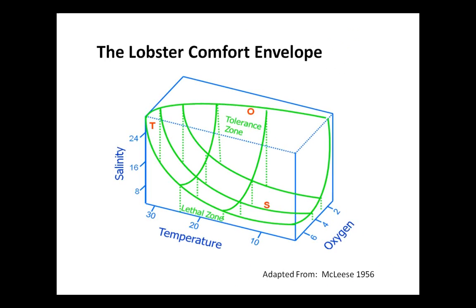Where does the lobster fit into this story, and how do temperature changes affect lobsters? You can't think of temperature change on its own, because the lobster's physiological comfort zone is affected by the interaction between temperature, salinity, and oxygen—and this has long been well known. As you move into lower salinities, the thermal tolerance range diminishes. Conversely, as you move into higher temperatures, the range of salinity tolerances becomes more limited.